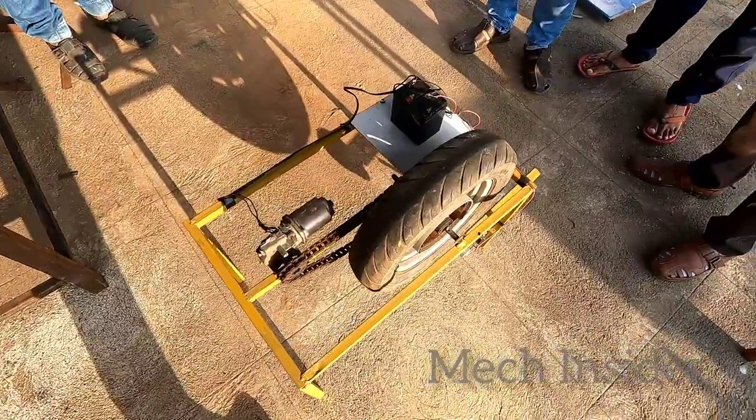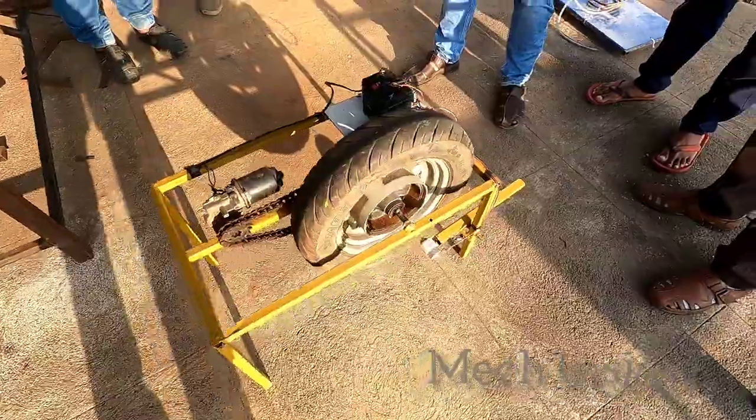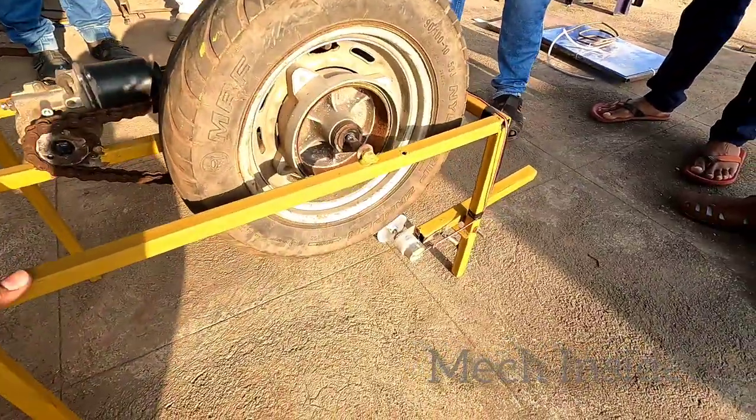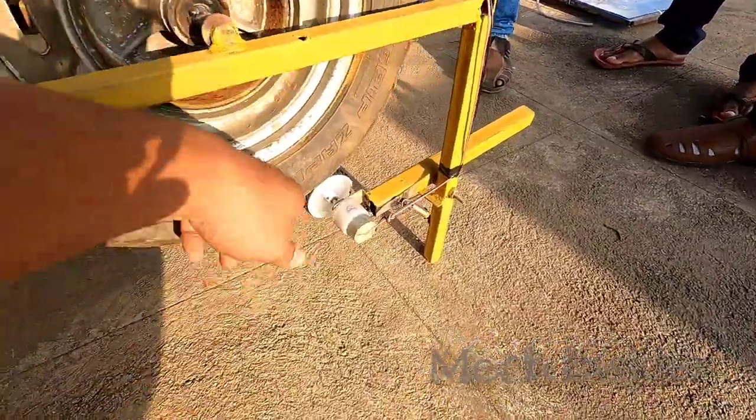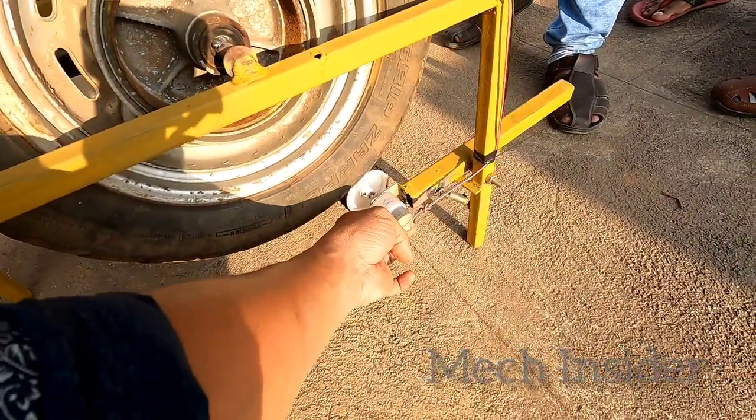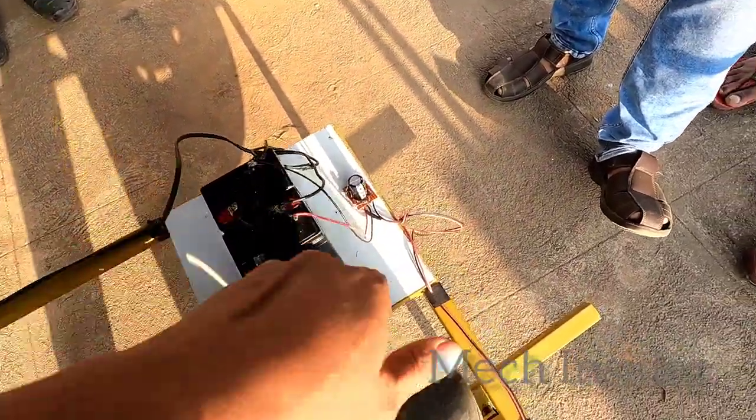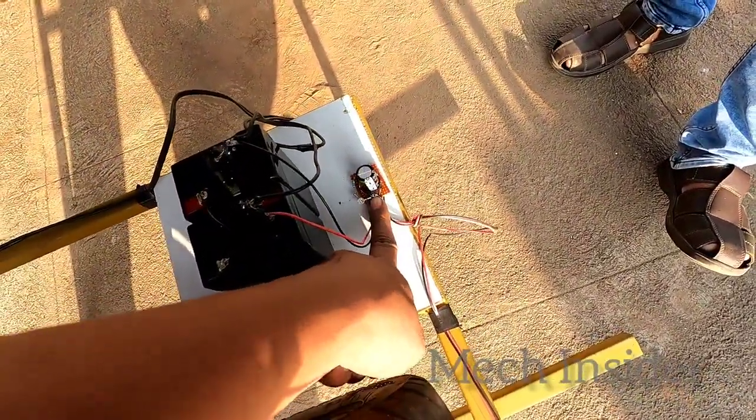The regenerative braking system's main concept is to generate electricity using braking. Whenever the brake is applied, some sort of electricity is generated. This is a generating mechanism which comes in contact with the wheel while we apply the brake. The electricity is stored in a battery, and we've used a bridge rectifier to rectify the voltage.